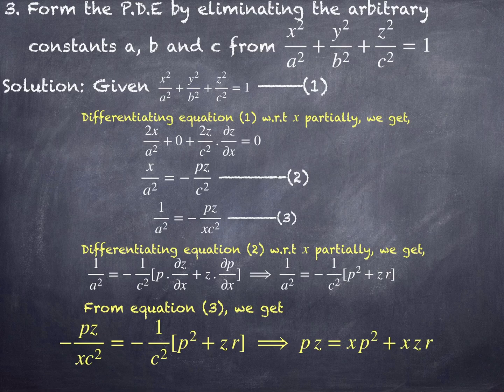In this problem I did not use differentiation with respect to y, but you can also proceed that way — differentiate equation 1 with respect to y partially, then differentiate equation 2 with respect to y partially, and you will get the solution qz equals yq² plus yzt. Either approach works.